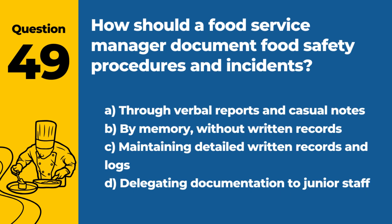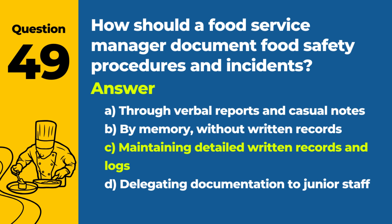Question 49: How should a food service manager document food safety procedures and incidents? a. Through verbal reports and casual notes. b. By memory, without written records. c. Maintaining detailed written records and logs. d. Delegating documentation to junior staff. Answer: c. A food service manager should document food safety procedures and any incidents in detailed written records and logs to ensure traceability and accountability, and to facilitate continuous improvement in food safety practices.